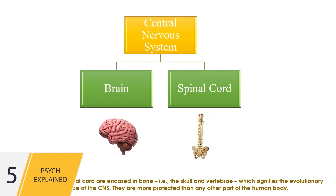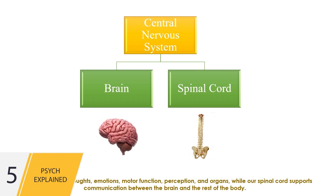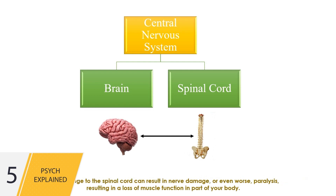They are more protected than any other part of the human body. Our brain controls thoughts, emotions, motor function, perception, and organs, while our spinal cord supports communication between the brain and the rest of the body. Any damage to the spinal cord can result in nerve damage, or even worse, paralysis, resulting in a loss of muscle function in part of your body.